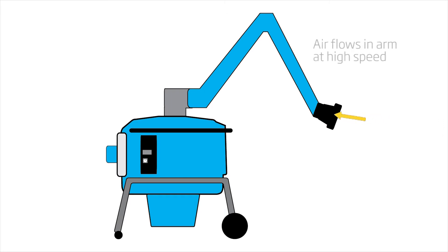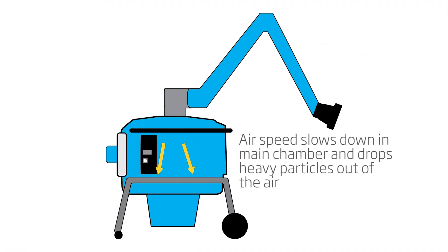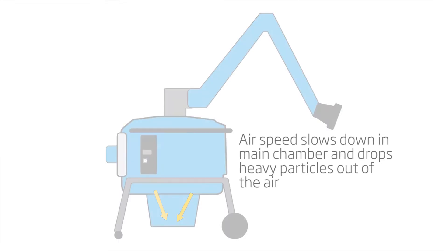The main chamber increases in size which slows down the conveying velocity, allowing the concentrated air to expand. The baffle plate located inside the main chamber redirects the high velocity air around the filter to aid in slowing it and allowing heavier particles to drop out.